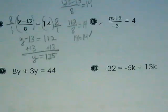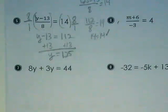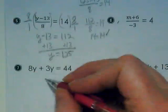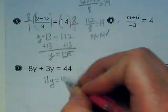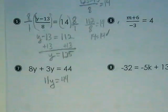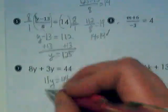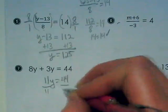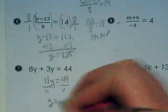And we'll do number 7. What do you notice on the left side of this equation? They're like terms. Our first step, if it's possible, is to combine like terms. If there's like terms to put together, we need to do that first. So this is going to become 11y is equal to 44. And then what do we do? Divide by 11. And we get y is equal to 4.